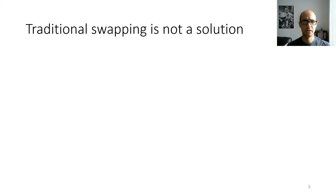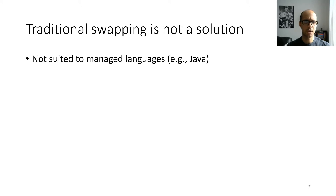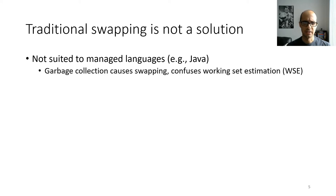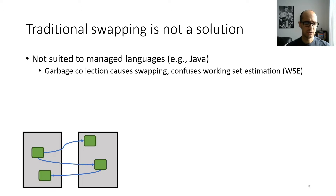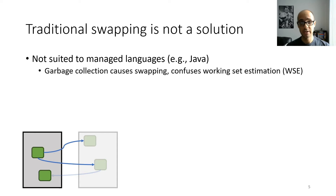Traditional desktop operating systems would swap unused memory to disk to deal with this problem, but traditional swapping is not a solution in the mobile environment. One problem is that traditional swapping is not a good fit for managed languages like Java. One reason is garbage collection — if some pages are swapped out, when the garbage collector runs it has to walk the heap, chase down pointers, and touch those objects on swapped-out pages, causing them to be swapped back in. The operating system's working set estimator is similarly going to get confused and think the app is using that page when in reality it's just the garbage collector.